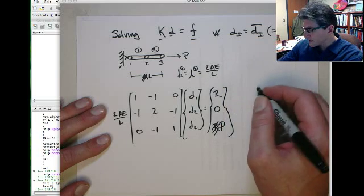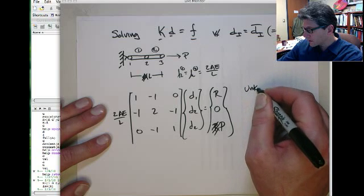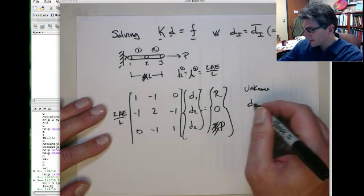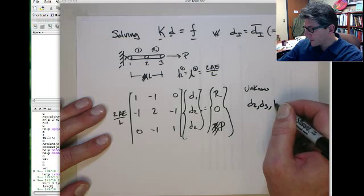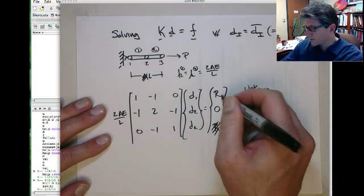So in this case, the unknowns are D2, D3, and then R1, the reaction force at node 1.